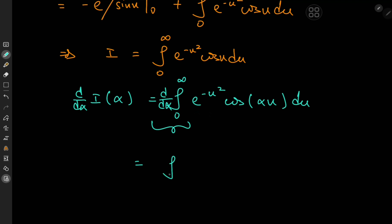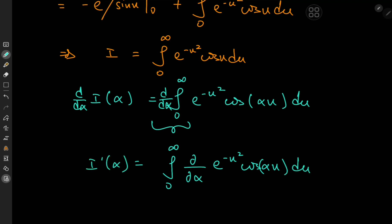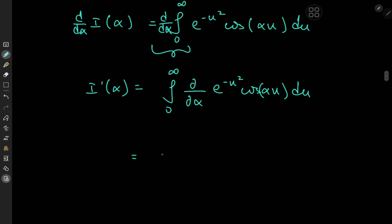We now have the integral from 0 to infinity of the partial derivative with respect to alpha of e to the negative u squared times cosine alpha u du, and this equals the derivative of I with respect to alpha. On differentiating, we get e to the negative u squared times negative u times the sine of alpha times u du.